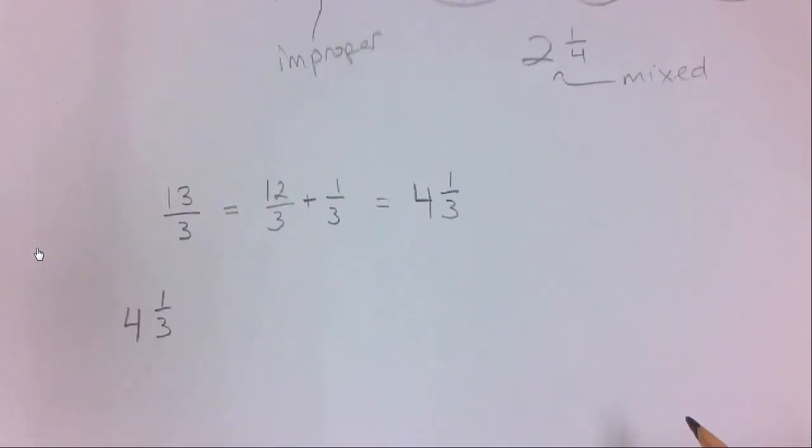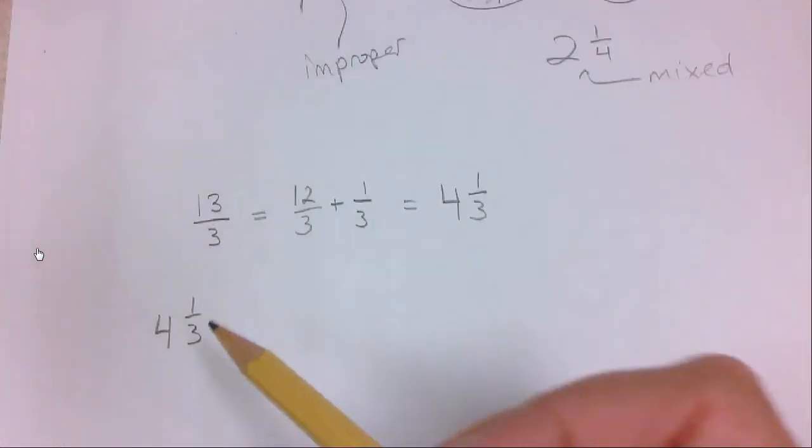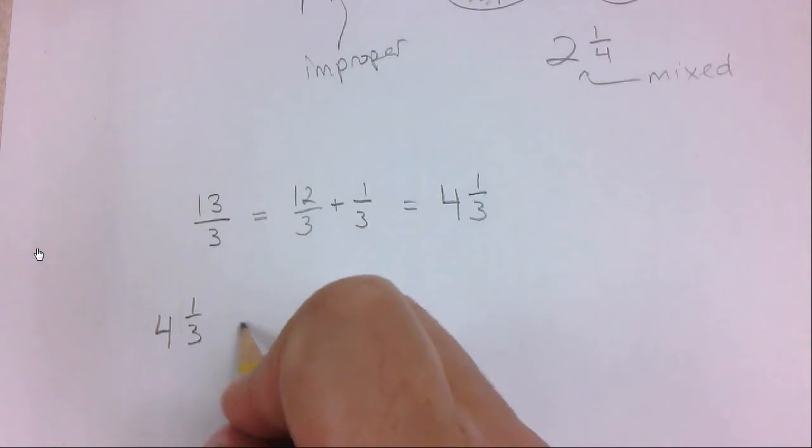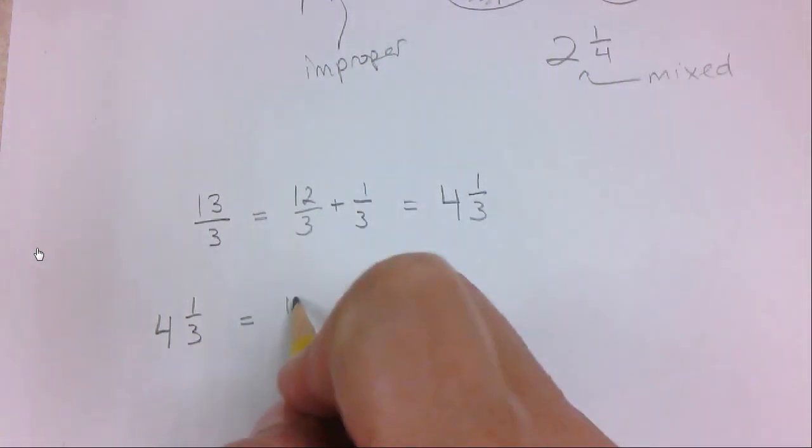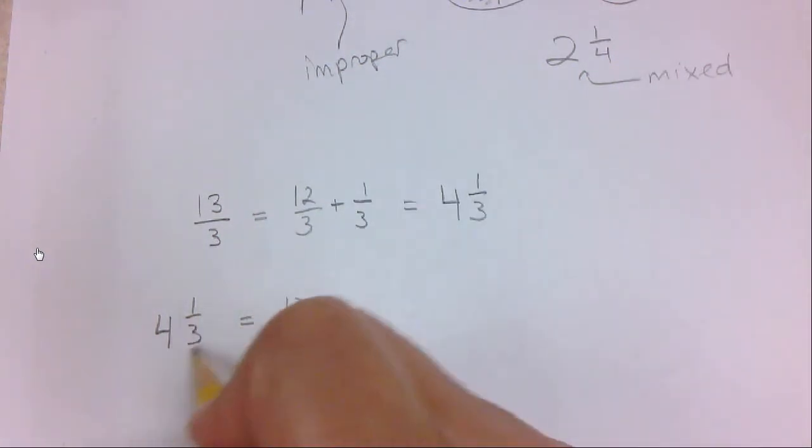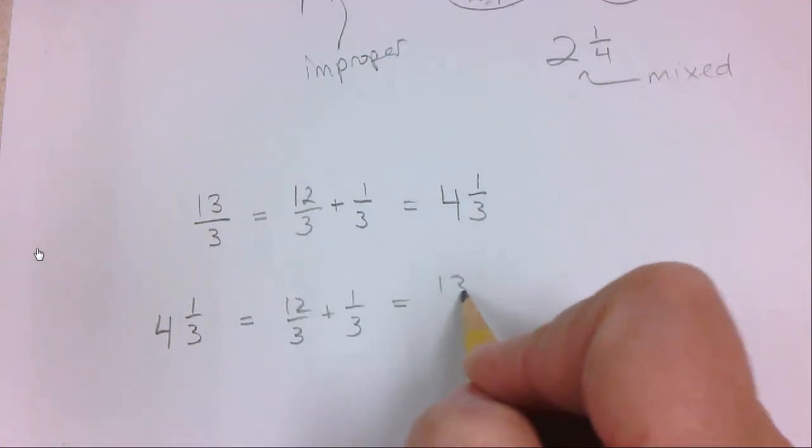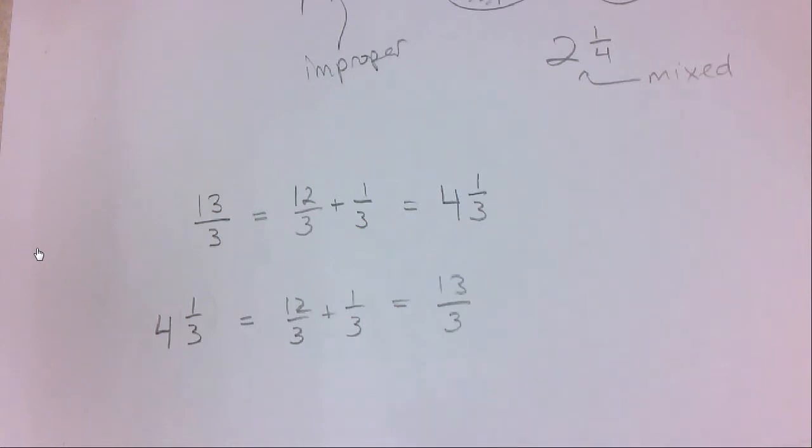Alternatively, let's go the other way. Let's convert 4 and 1 third, put it back into thirds. How many thirds is this whole number 4? Well, each whole is 3 thirds. So if you have 4 wholes, that's 12 thirds. So 4 and 1 third is equal to 12 thirds, plus this other 1 third for a total of 13 thirds.